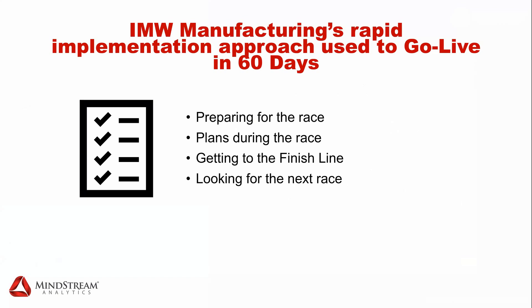We've got four main sections we're going to talk about. One is preparing for the race — picking the solution or picking your car, looking at the scope, who's part of the pit crew, and risk assessment — the things you'd do before starting a project or a race. Then we look at plans during the race: what we do to keep on track, who are our sponsors, who's the crowd, what did that final lap look like. And then looking for the next race — what do we do next?